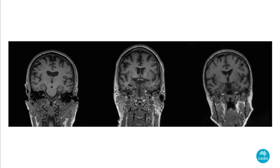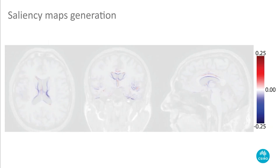At the end of the optimization process, DBCE outputs the closest brain image that will reverse the prediction of the studied deep neural network. As we can see in this figure, deformations produced by DBCE are constantly producing an enlargement of the ventricle's region, and a shrinkage of hippocampal and temporal regions. To ease the interpretation of such counterfactual images, we derive comprehensive saliency maps based on the difference between the initial image and the delusive image generated by our method.